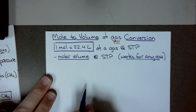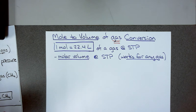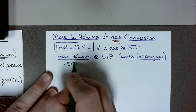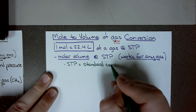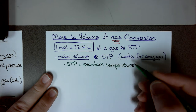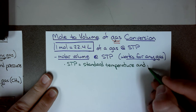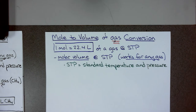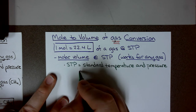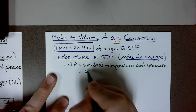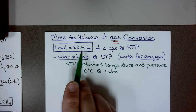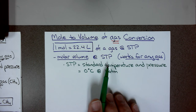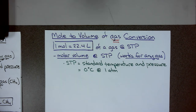STP stands for standard temperature and pressure. We specify this because if I change the temperature or pressure, everything changes for a gas. We hold it at standard temperature and pressure to keep it at 22.4 liters. Standard temperature and pressure is 0 degrees Celsius at 1 atmosphere. If either changes, this value is no longer valid.